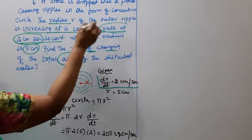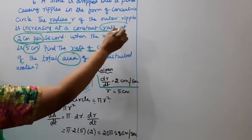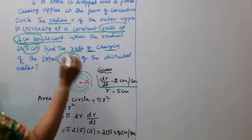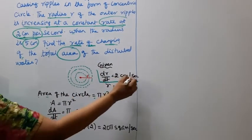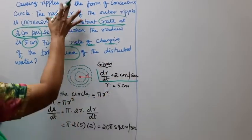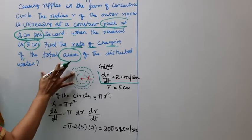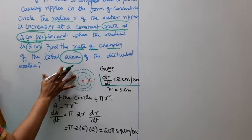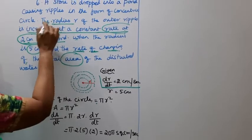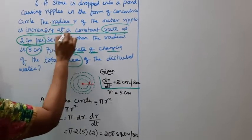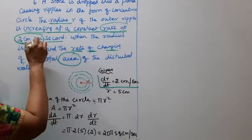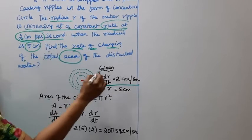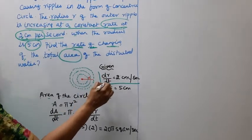The radius is increasing at a rate of 2 cm per second, so dr/dt = 2 cm per second. We need to find the rate of change of the total area, which is dA/dt.